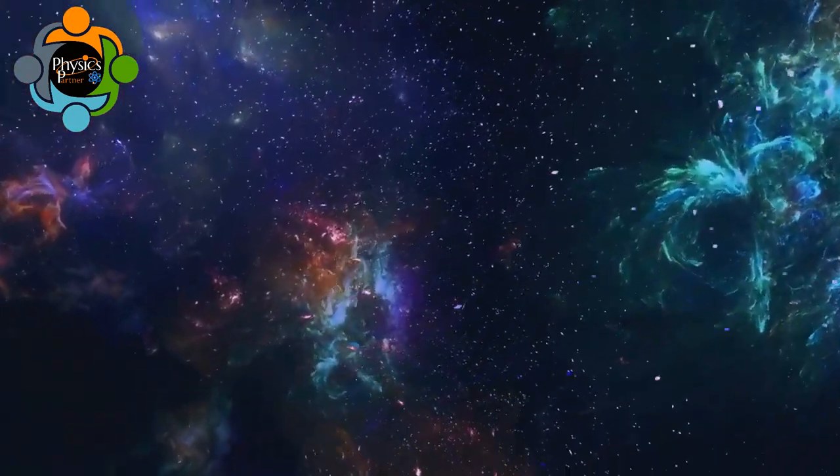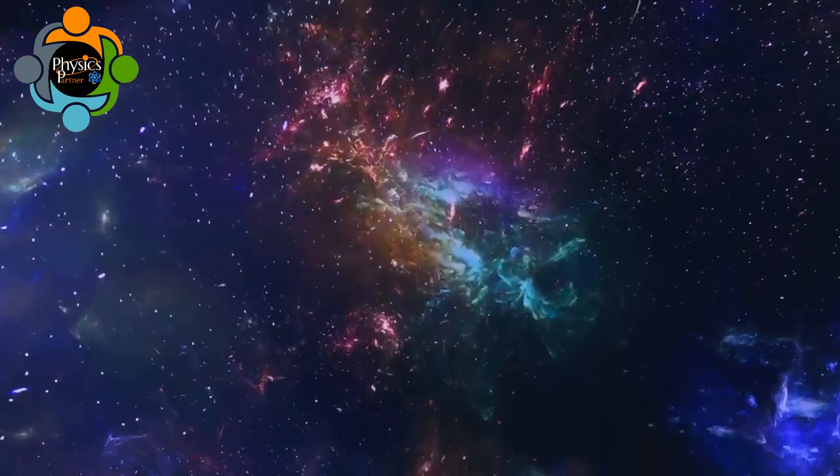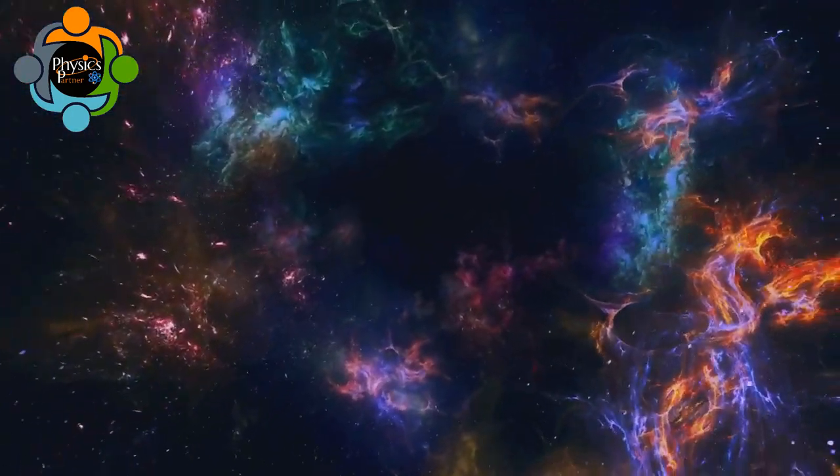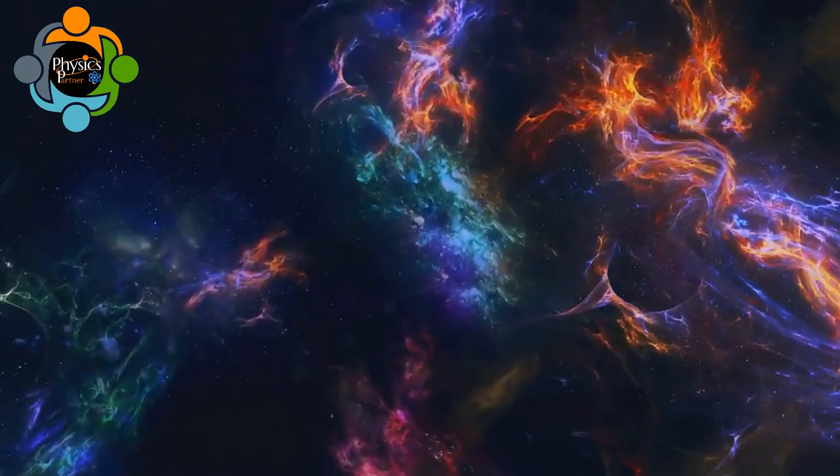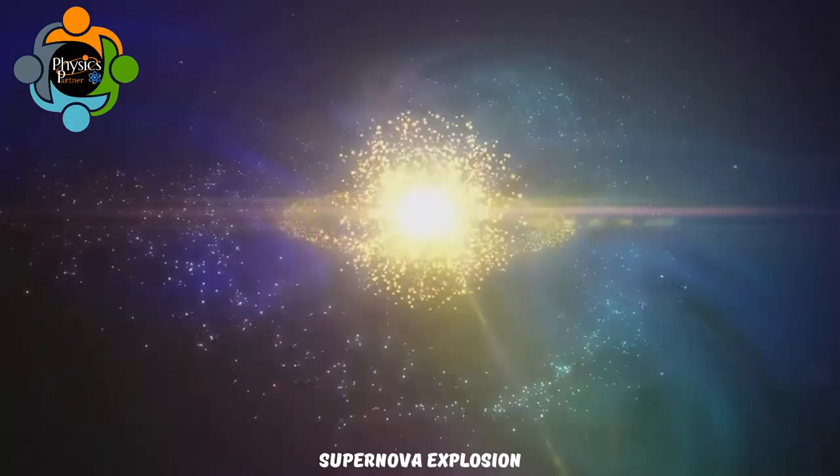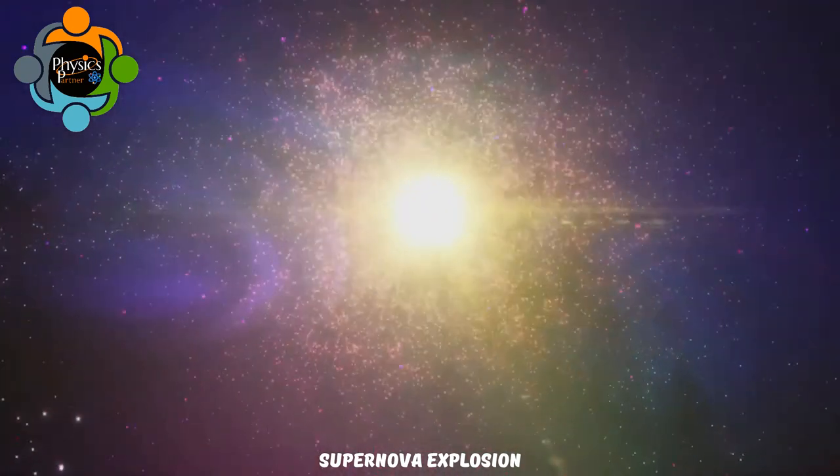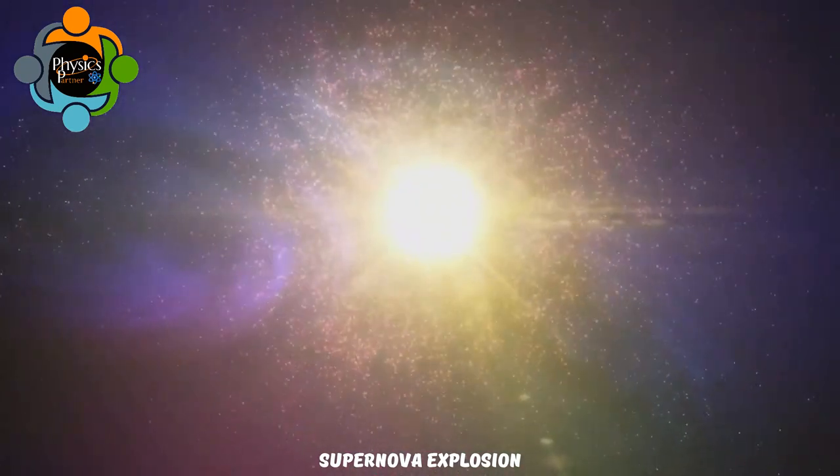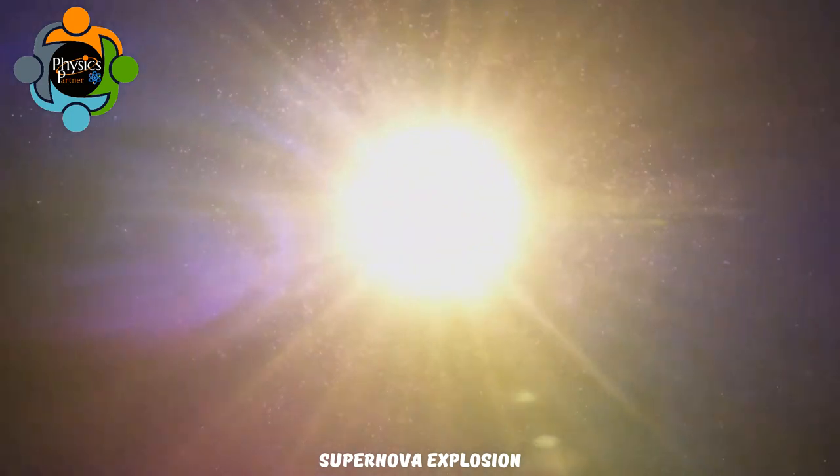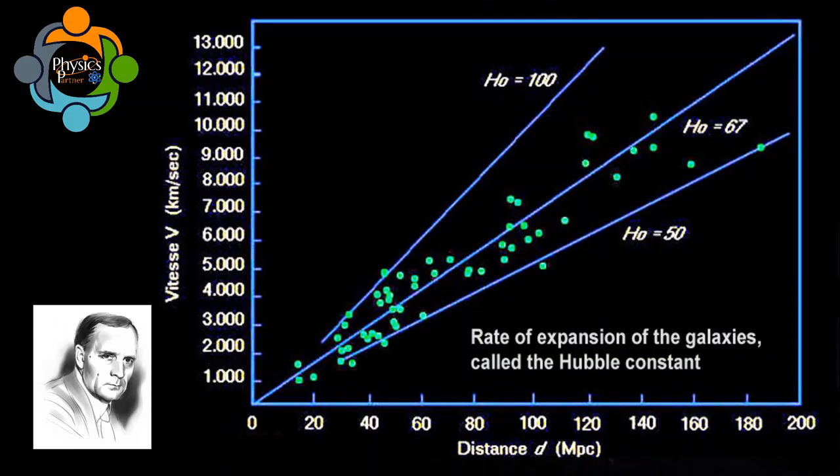As we already discussed, the universe is expanding. What does it mean? It means there should be a specific speed at which a galaxy is moving away from Earth. It can be found from the change in wavelength of the galaxy's starlight due to redshift. The distance of a far galaxy, let's say d, can be determined using the brightness of a supernova in that galaxy.